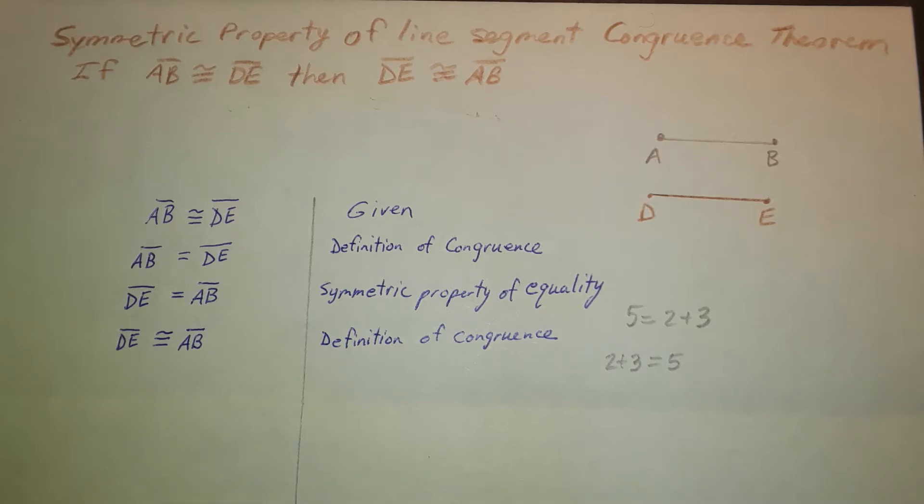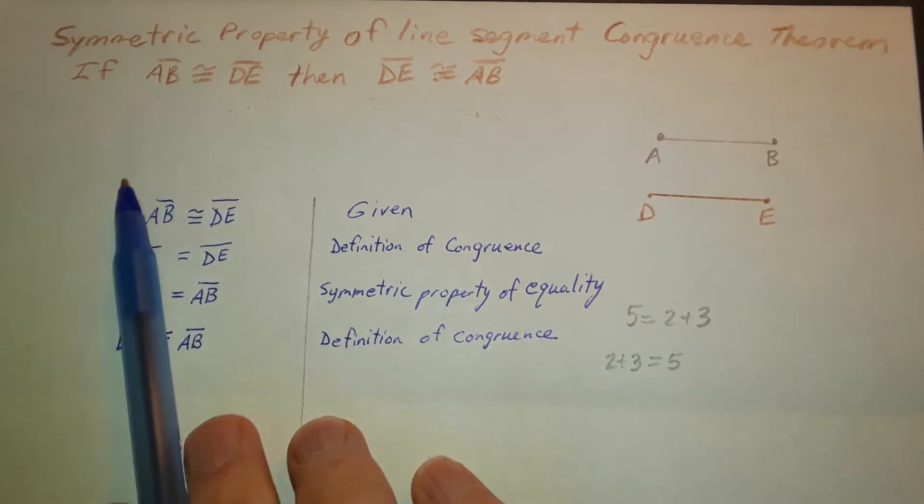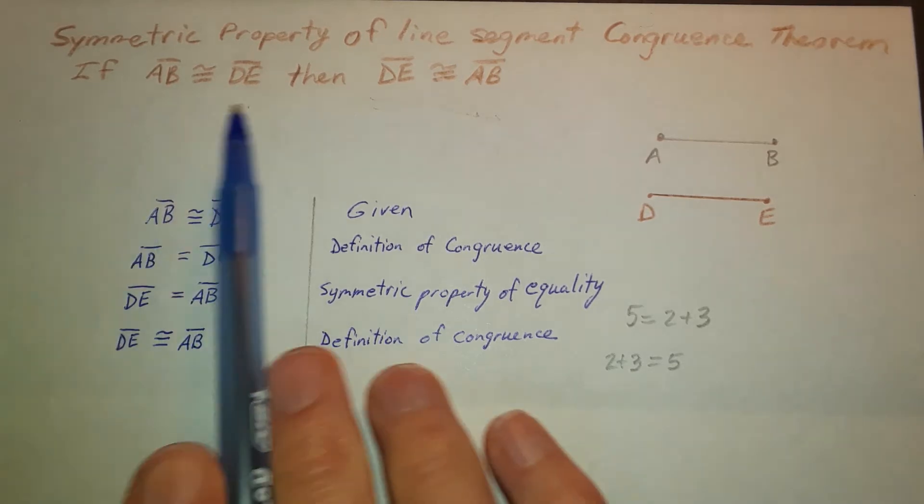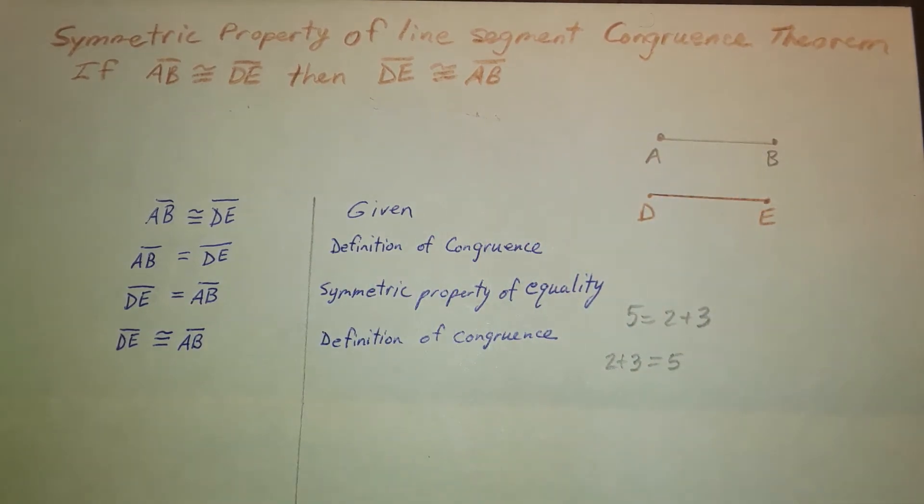At this point, we can end our proof. We've established through a logical chain that we have that this and this happens. If we have this, then we know this is true. And we have proven this theorem, which is the symmetric property of line segment congruence.